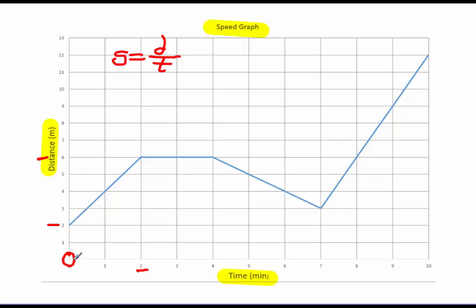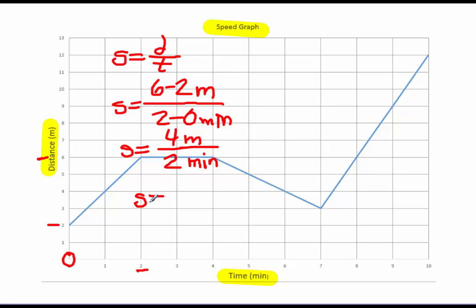So how much did the distance change? Six minus two. So six minus two. The unit is meters. Over. And what is the change in time from zero to two? That was two minutes. So the speed over this time would be four divided by two.